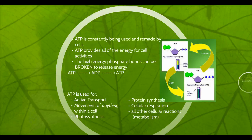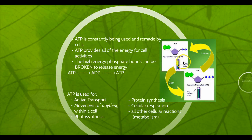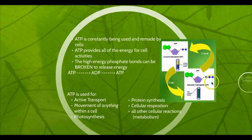ATP is constantly being used and remade by your cells. It provides all of the energy for all the cell activities that you could possibly think of. The high energy phosphate bonds can be broken to release that energy. We can compare the ATP molecule to a full battery — it's full of energy, fully charged. And when we use that energy and break that bond between the phosphates, it can be related to a partially charged battery.